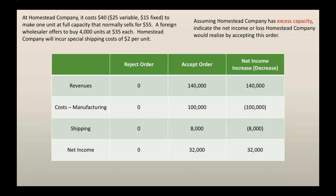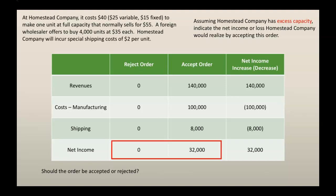So we have gone through and indicated the net income or loss. But then there was that second part of this problem: should the order be accepted or rejected? If we accept the order, we get an additional $32,000 of net income. So we definitely want to accept this order.